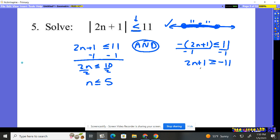The sign will always flip, and you always have a negative there. Now I've got to solve it. So I just subtract 1, subtract 1. 2n greater than or equal to negative 12. Divide by 2, divide by 2. n has got to be bigger than or equal to negative 6. So we need an n smaller than 5, and it's got to be bigger than negative 6.